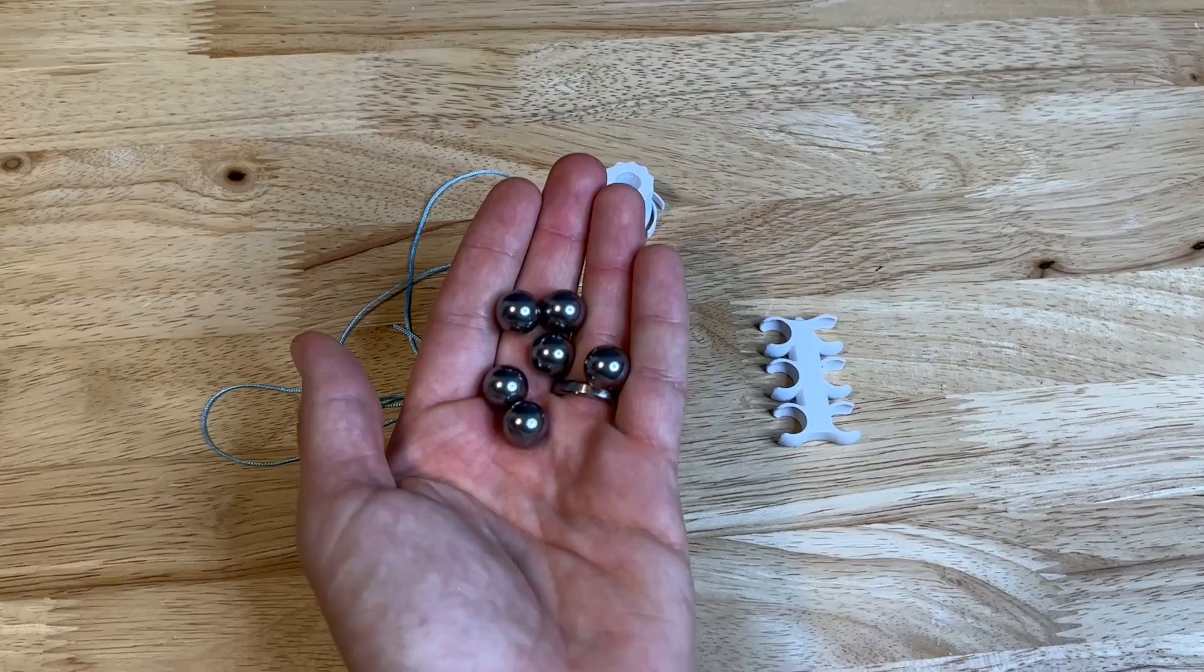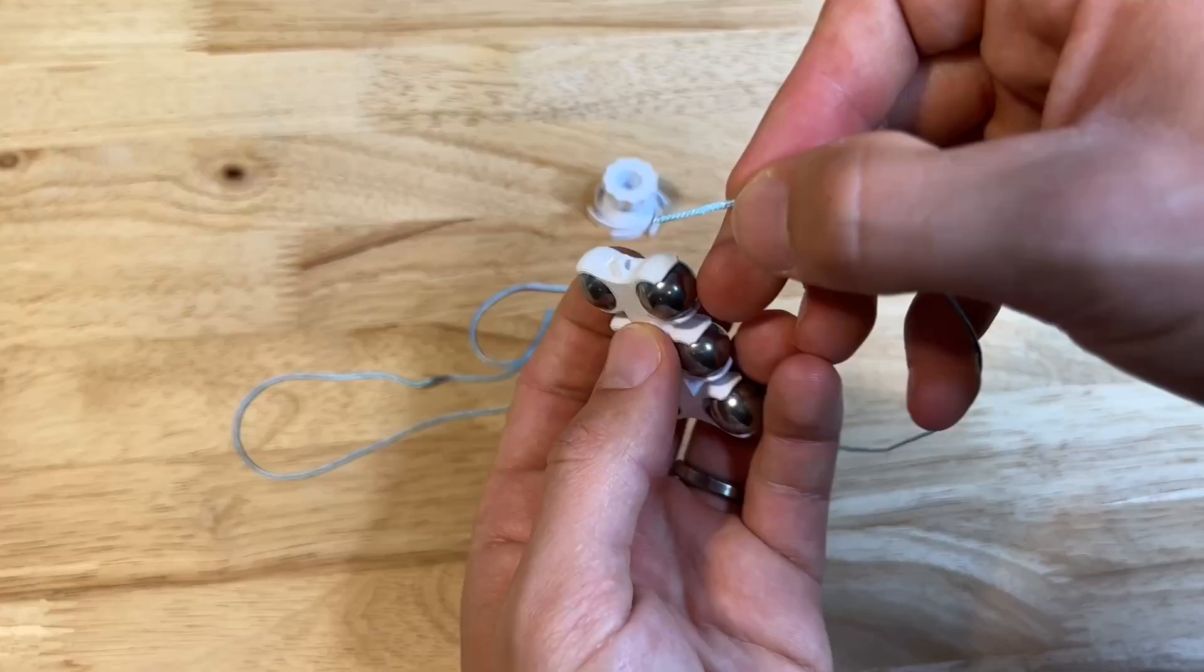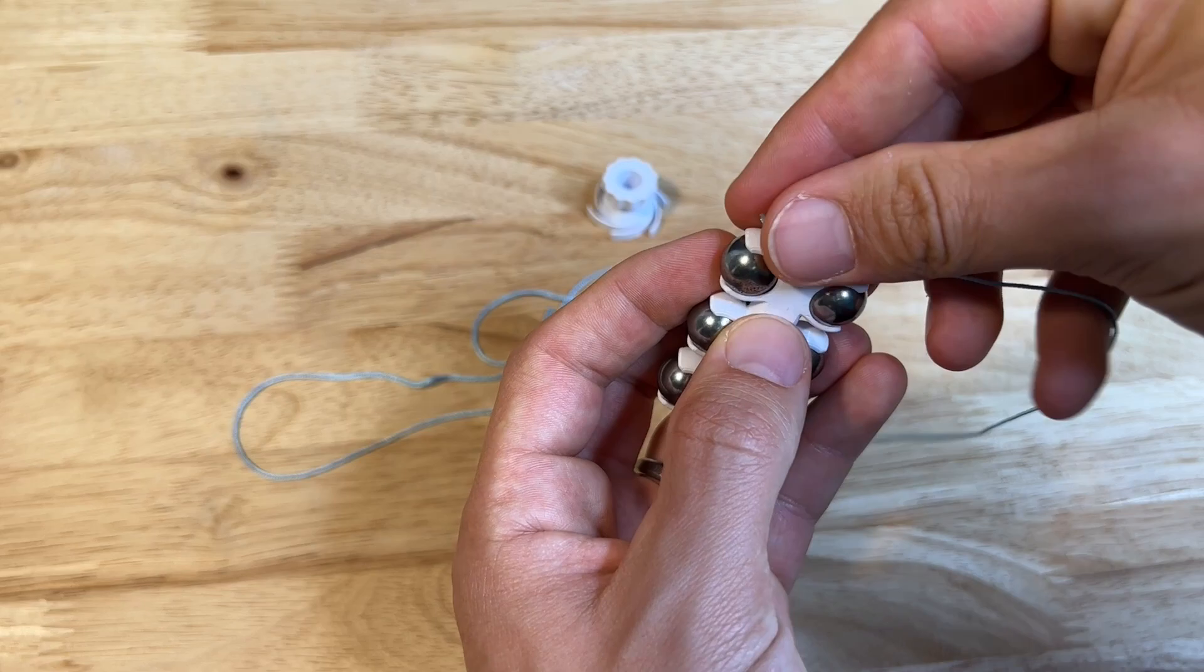Pop your ball bearings into the weight. Super satisfying, so make sure you enjoy this part. Then grab your string and tie it through the top of the weight. I'm just using a simple double knot here. Anything that will hold will work.